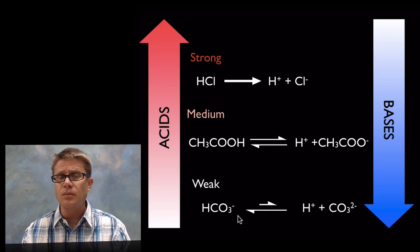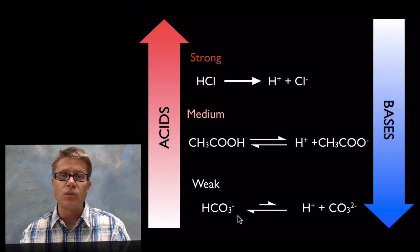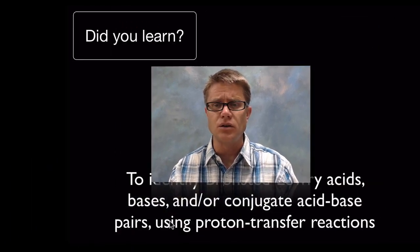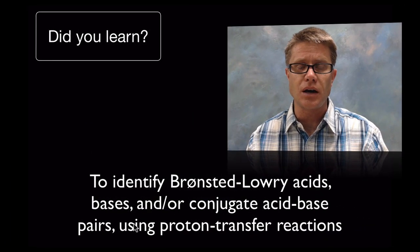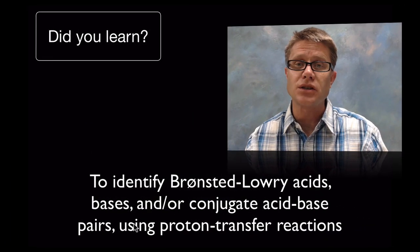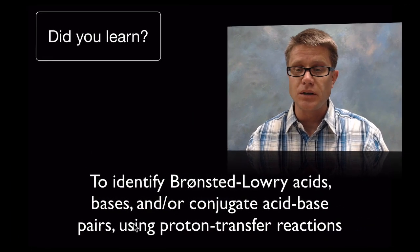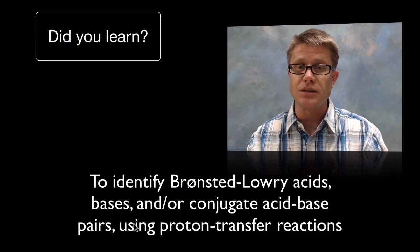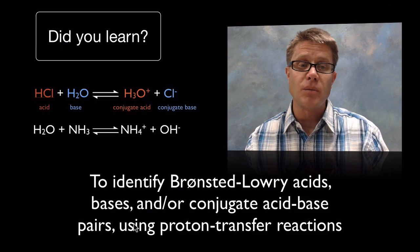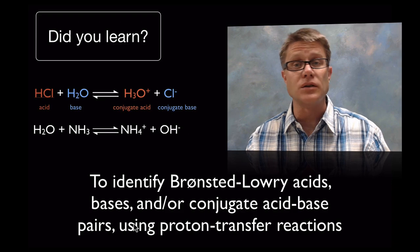That's the Bronsted-Lowry model of what an acid and a base is, and how we figure it out in a neutralization reaction. To identify what's the acid and what's the base and figure out these conjugate pairs, just look for where the proton is going — where it's headed tells you what's the acid and what's the base. I hope that was helpful.